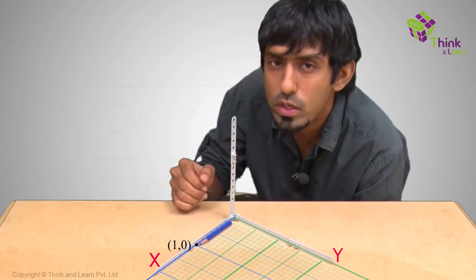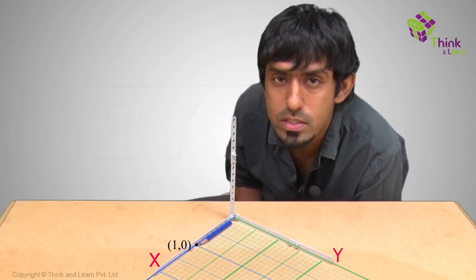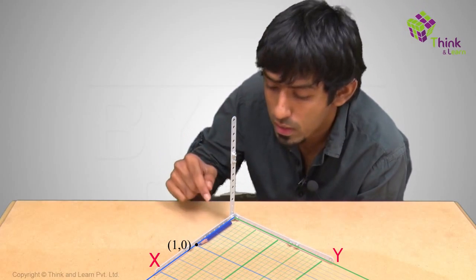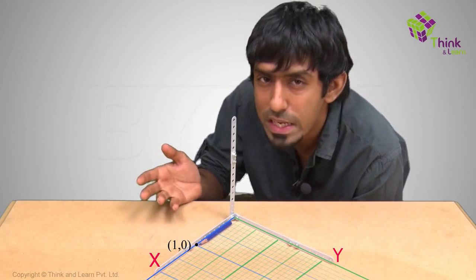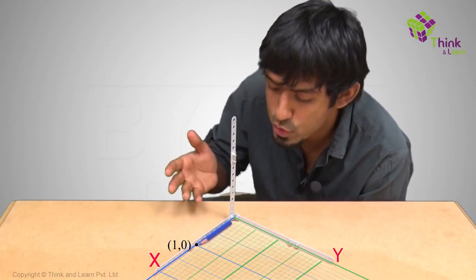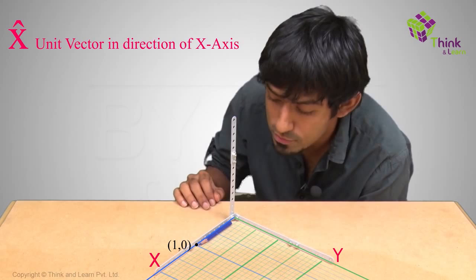So if I want to refer to 1, 0, I can refer to it as 1 into my vector, unit vector along x direction. I want to give it a name, so I'll call it x cap, just to say it's the unit vector pointing in the direction of x itself.